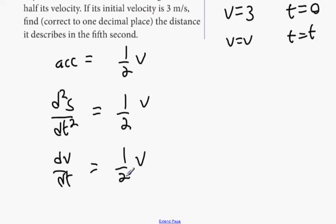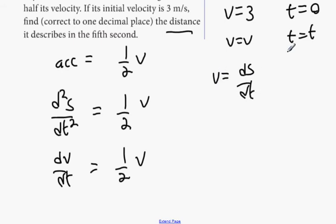We can actually integrate this — there's no need for anything else. We want the distance described in the fifth second, so we want S at the end. We're going to find V in terms of T. We know V is dS/dT, so once we find V in terms of T, we'll have dS/dT in terms of T. Then we integrate one more time to find S in terms of T. We find the distance covered after four seconds, the distance covered after five seconds, and take those two numbers away from each other to get the distance traveled in the fifth second.